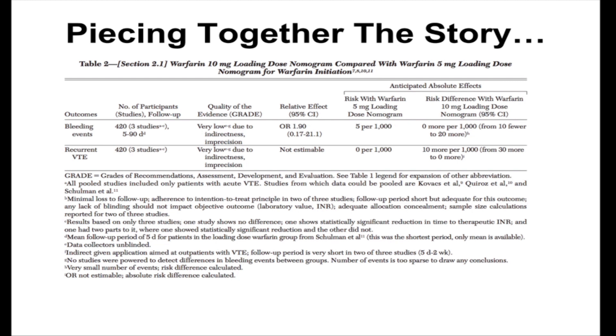In our case, for bleeding events, the 5 mg loading dose had 5 events per 1,000 patients, while the 10 mg loading dose had 0 per 1,000 patients. For recurrent VTE, the 5 mg loading dose had 0 events per 1,000 patients, while the 10 mg loading dose had 10 events per 1,000 patients.